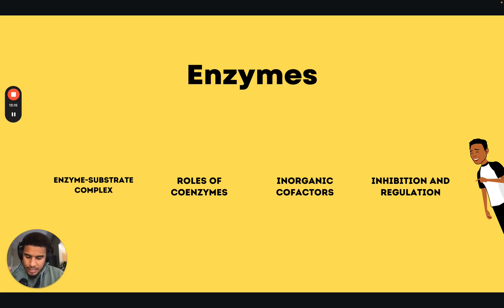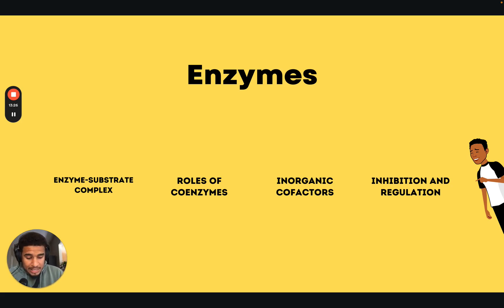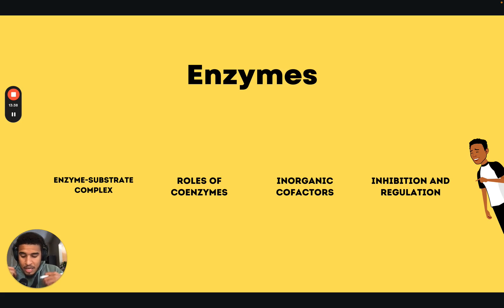Inorganic cofactors. When we talk about inorganic cofactors, we're talking about metal ions or small inorganic molecules that help enzymes in catalyzing reactions by assisting in substrate binding or participating in the reaction itself. For this, you need to understand the concept of stabilizing protein structure, catalysis of reactions, redox reactions, and structural support.